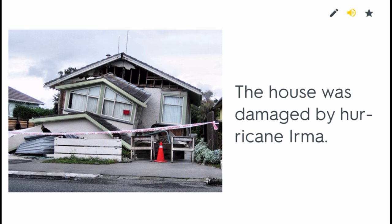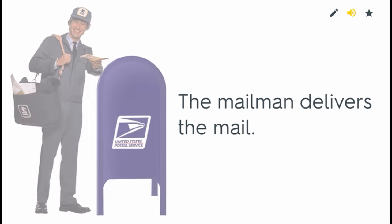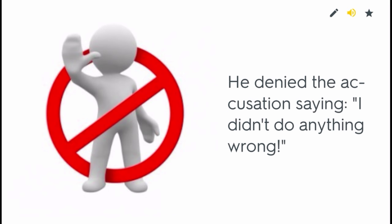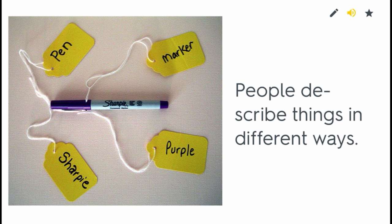To damage. The house was damaged by Hurricane Irma. To deliver. The mailman delivers the mail. To deny. He denied the accusation saying, 'I didn't do anything wrong.' To describe. People describe things in different ways.